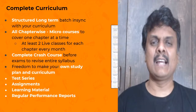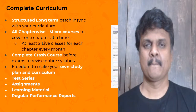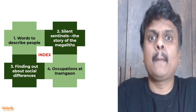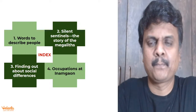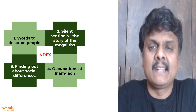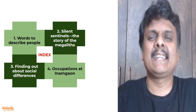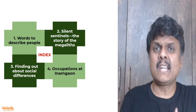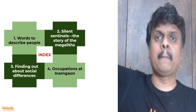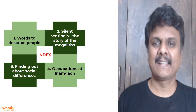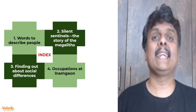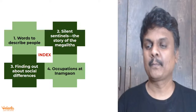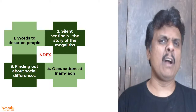It's time to start part two of what books and burials tell us. Here is what we are going to deal with: words to describe people, what are silent sentinels - it's all about the burials, the story of the megaliths, what megaliths are, and whether there were social differences - was the burial different for a rich man versus a poor person? We will also see the different occupations at Inamgaon.